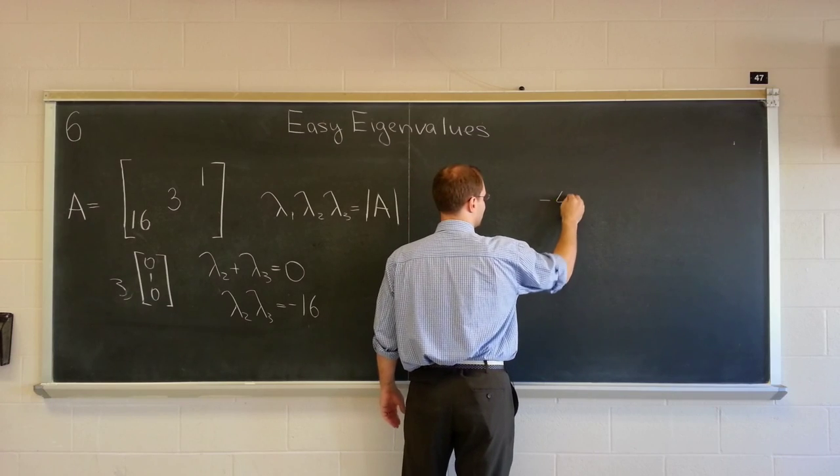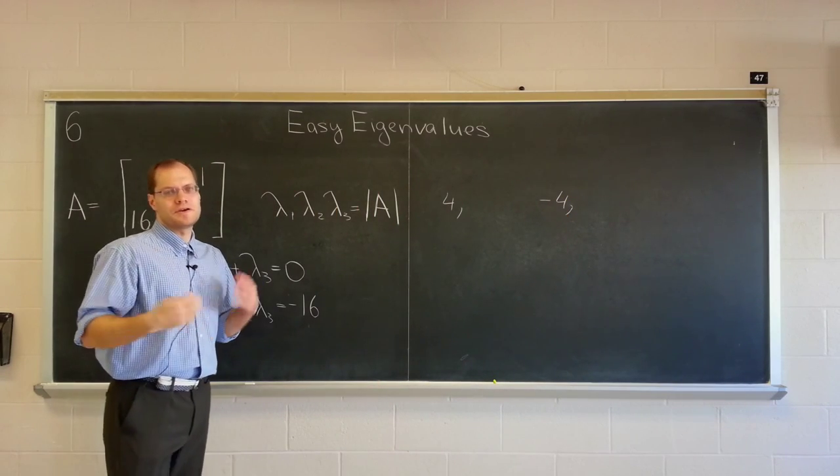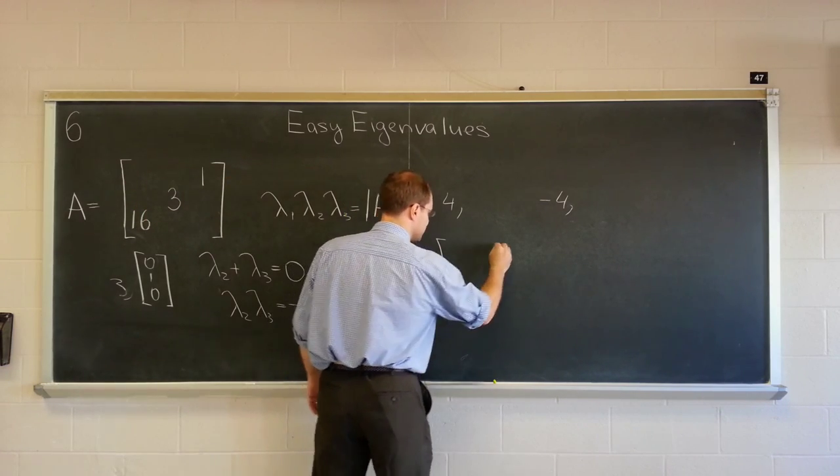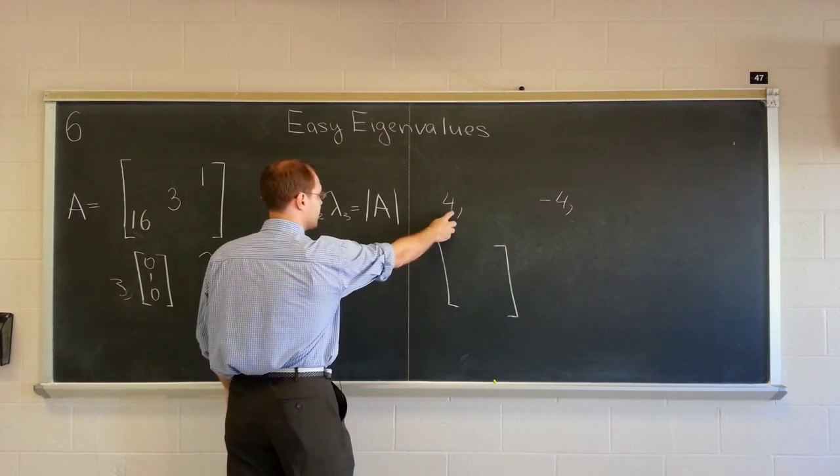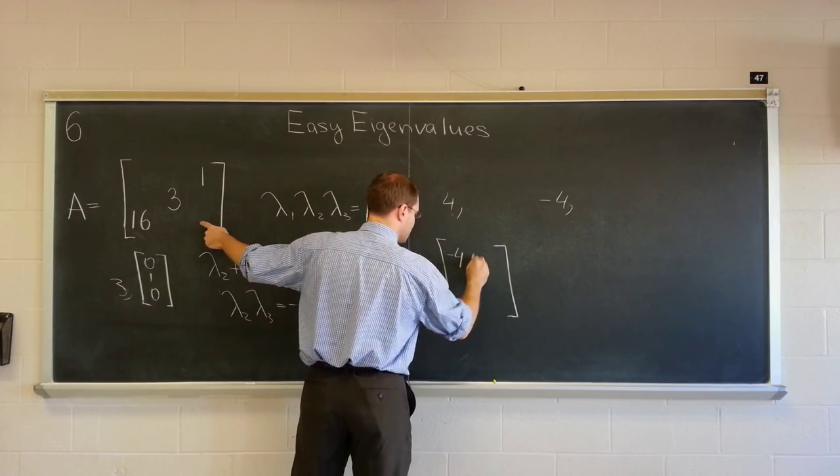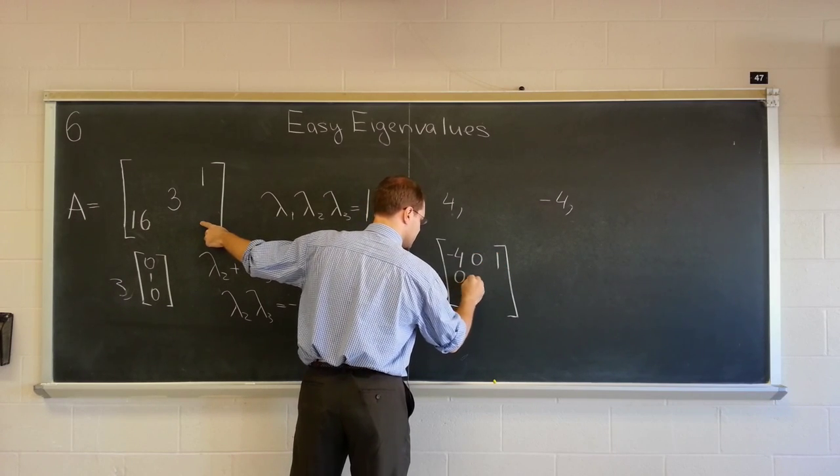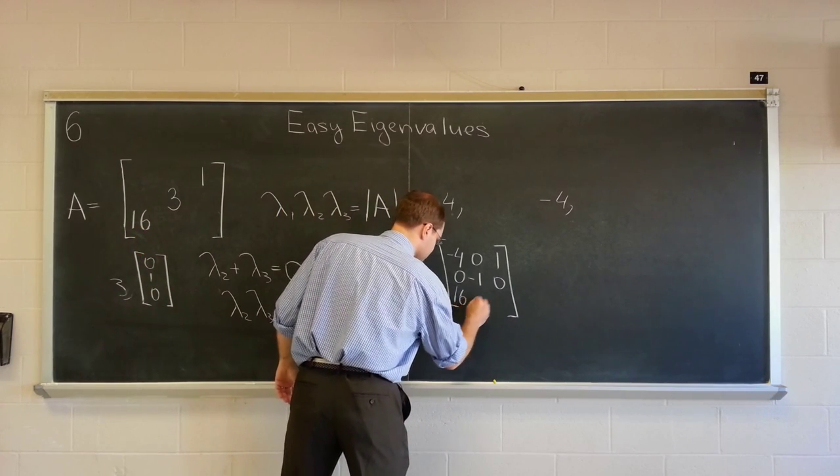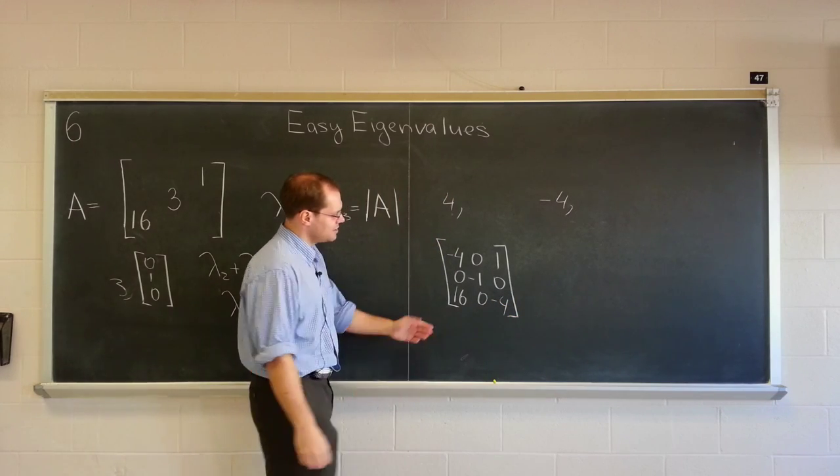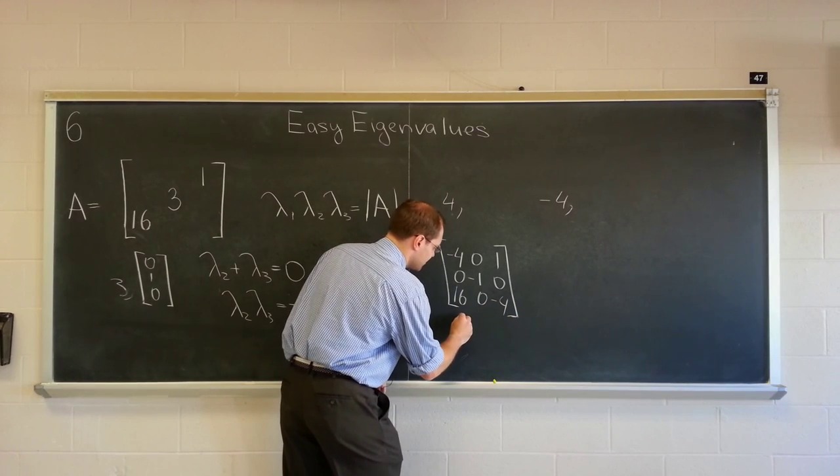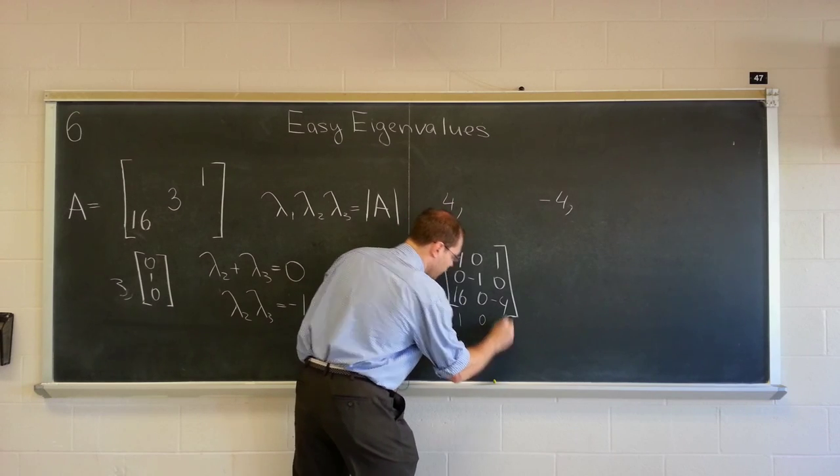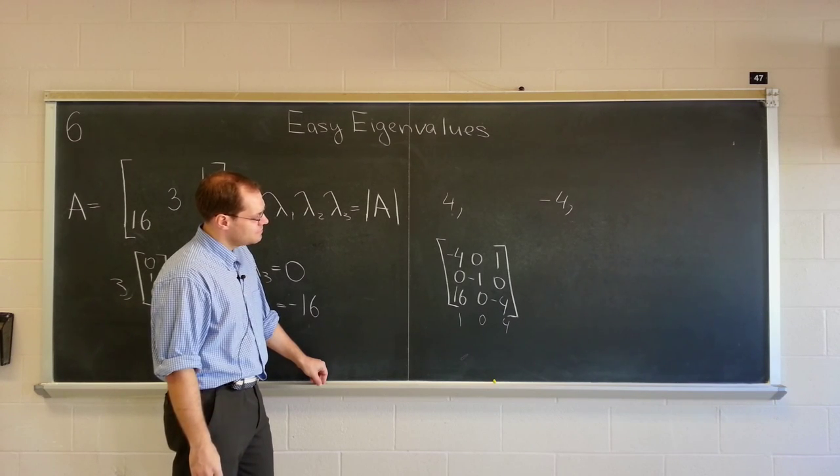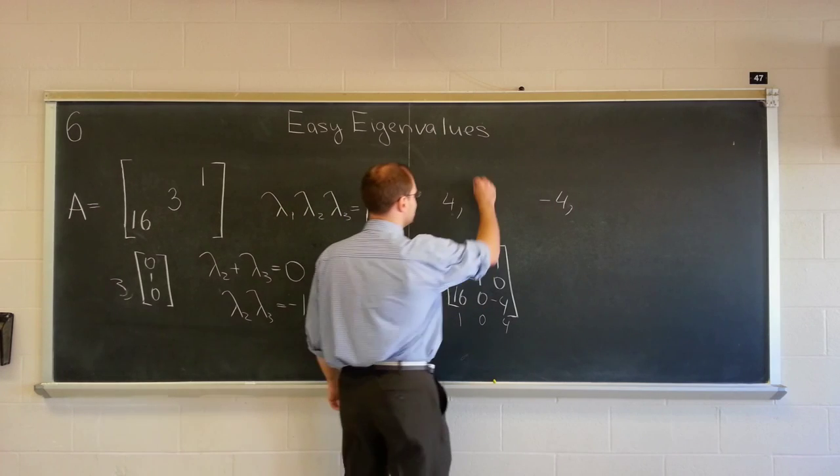Four and negative four. And it's not one of those situations where you have to work for the eigenvectors. Let's see what the one corresponding to four is. Subtracting four from the diagonal, we end up with minus four zero one, zero minus one zero, and sixteen zero, zero minus four. And I see right from here that the corresponding eigenvector is (1, 0, 4).